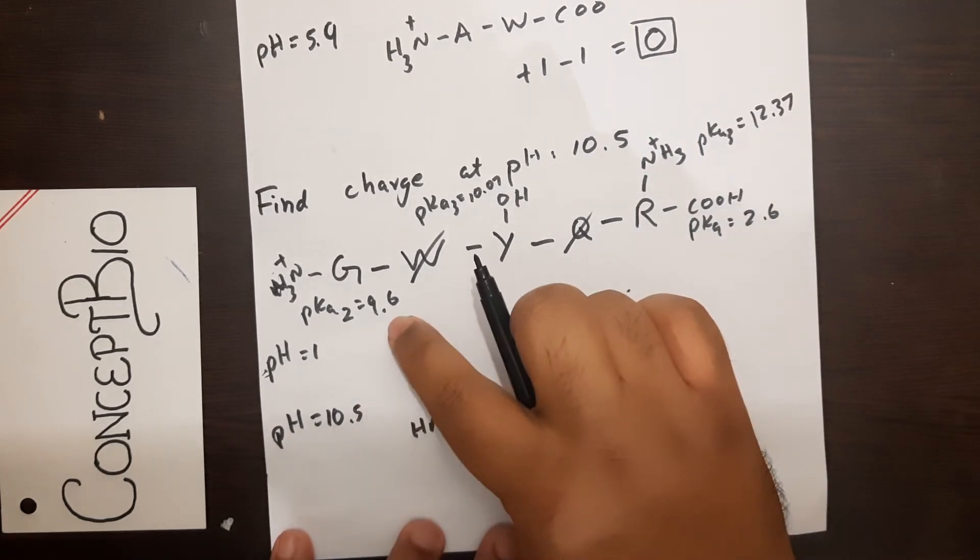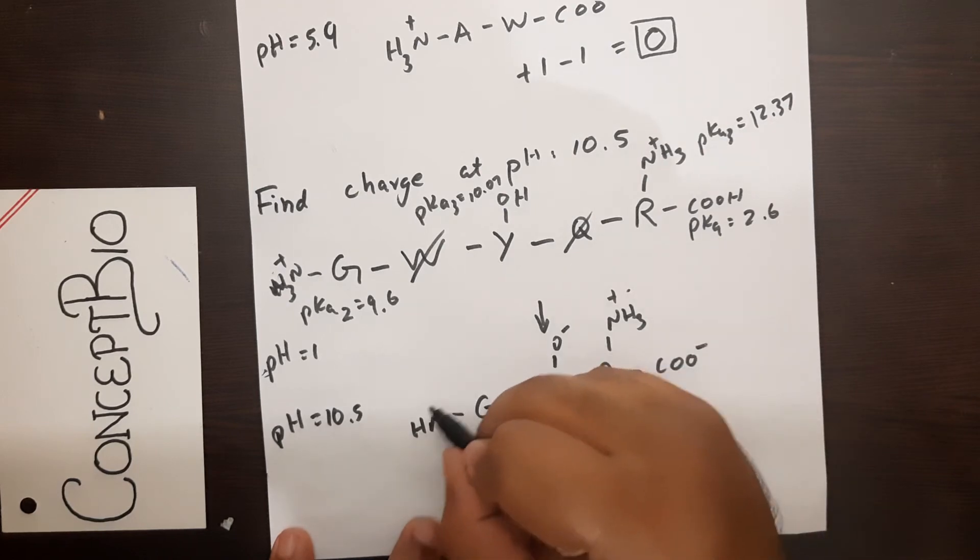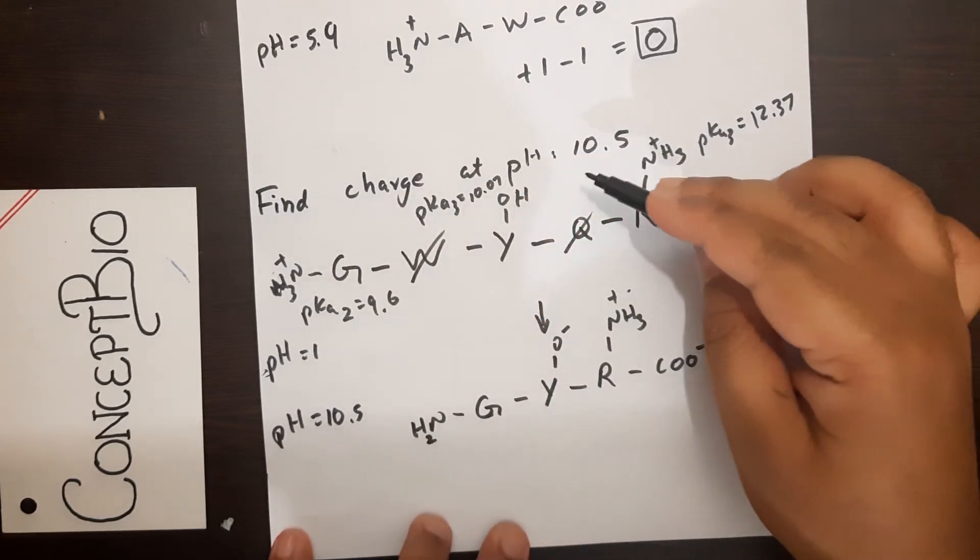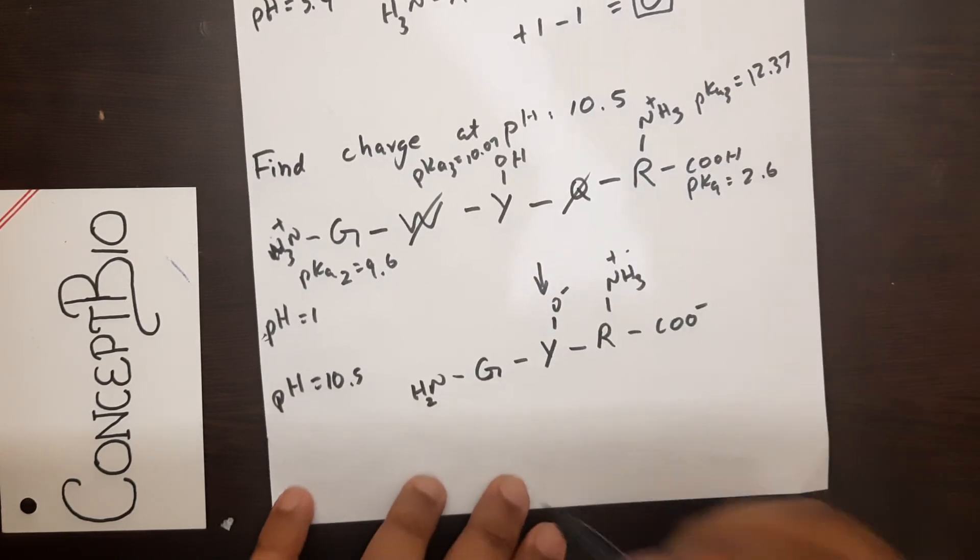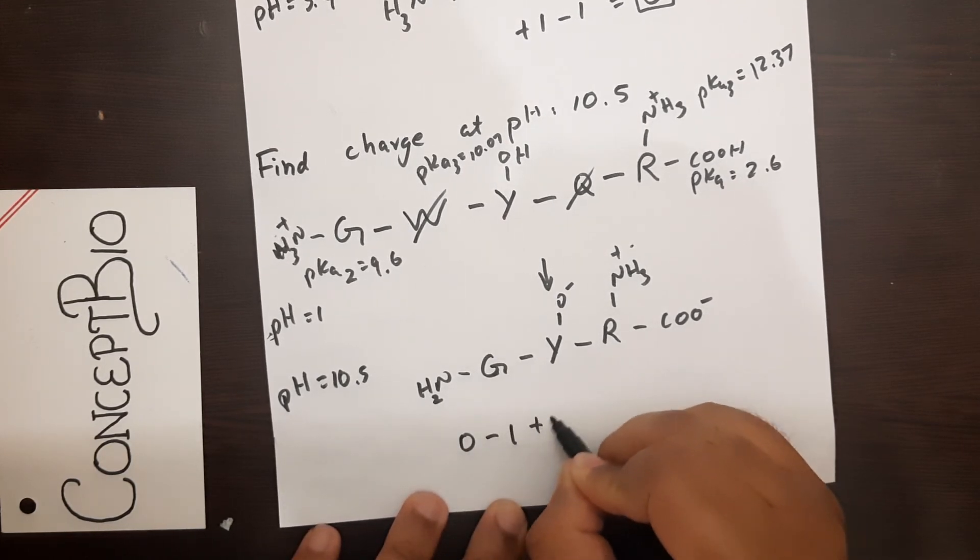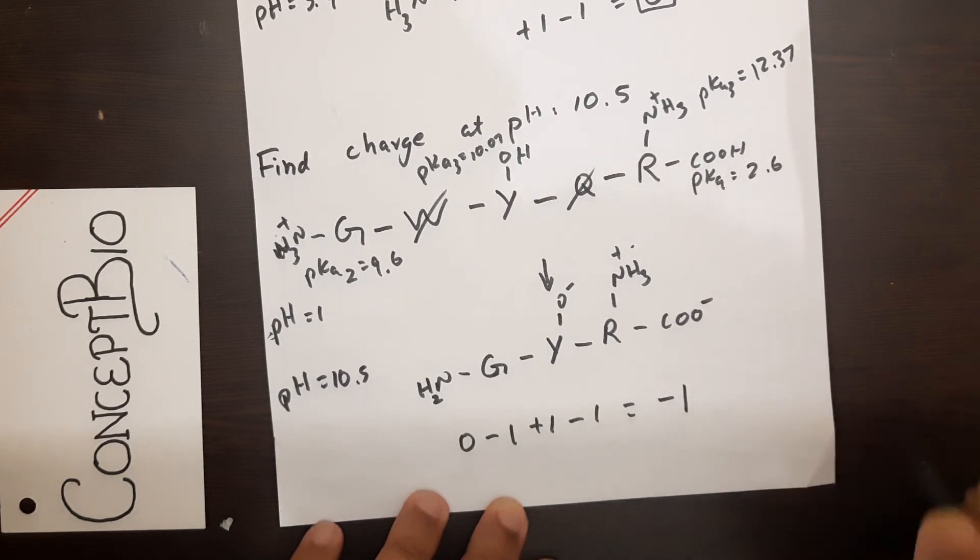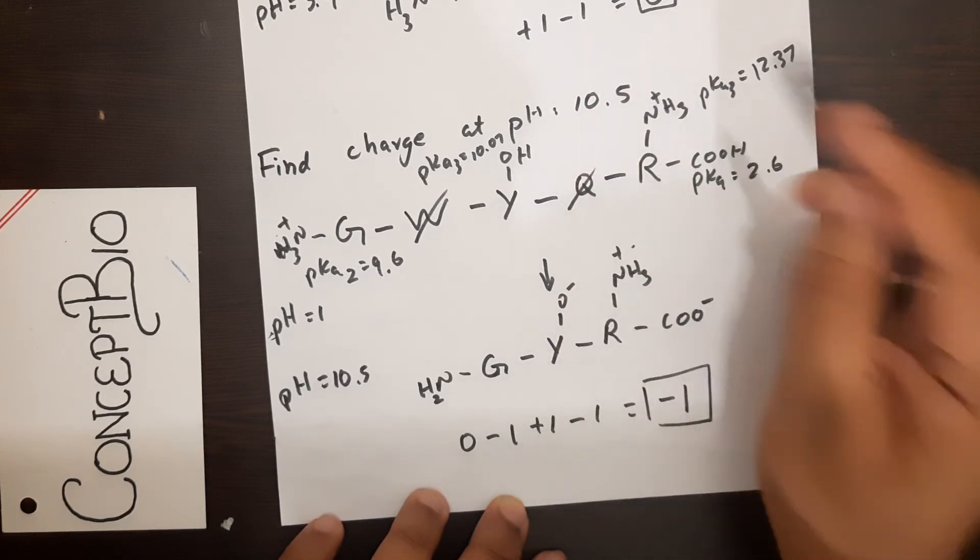Is 10.5 greater or less than 10.07? It is greater, therefore deprotonation: O minus. Is 10.5 greater or less than 9.6? It is greater, therefore deprotonation: NH2. So we have: COO minus, NH3 plus, O minus, NH2. What will the net charge be? 0 minus 1 plus 1 minus 1, which totally equals minus 1. And this is the charge of this polypeptide chain at pH 10.5.